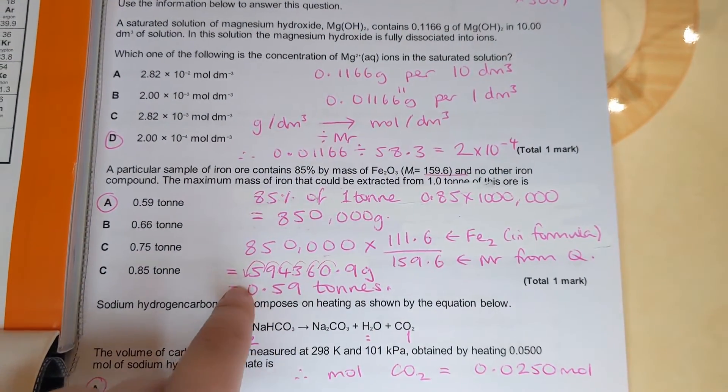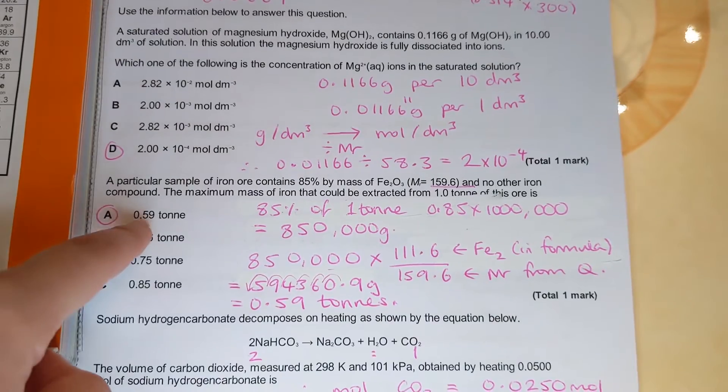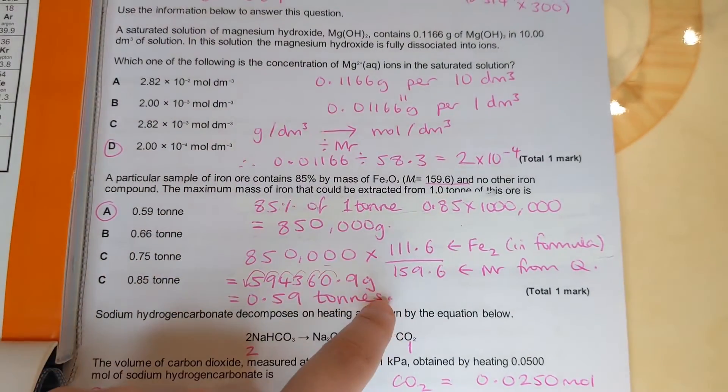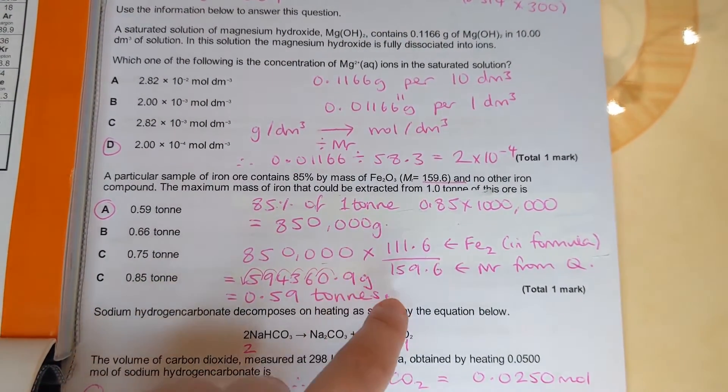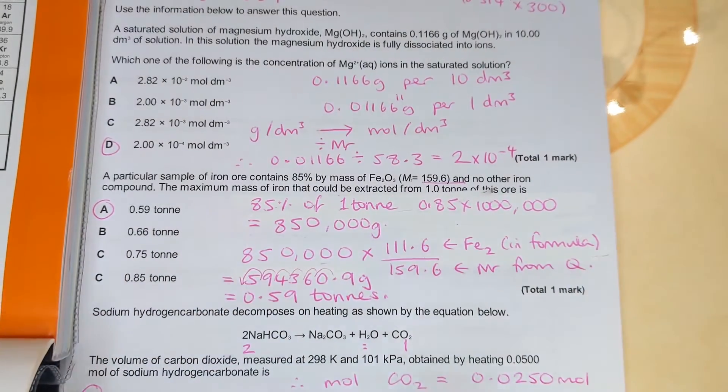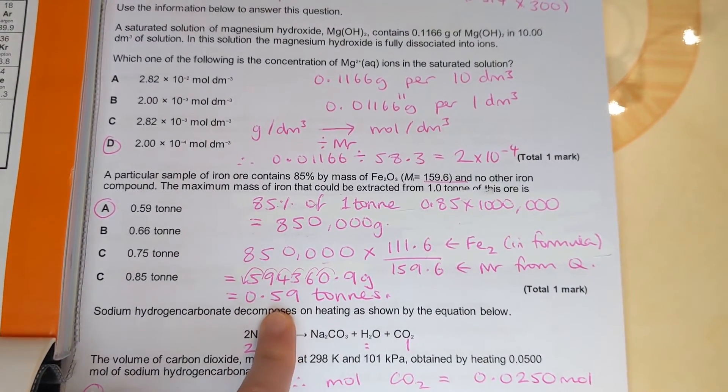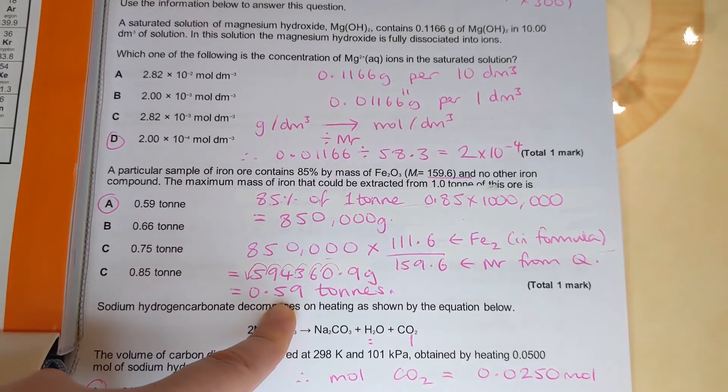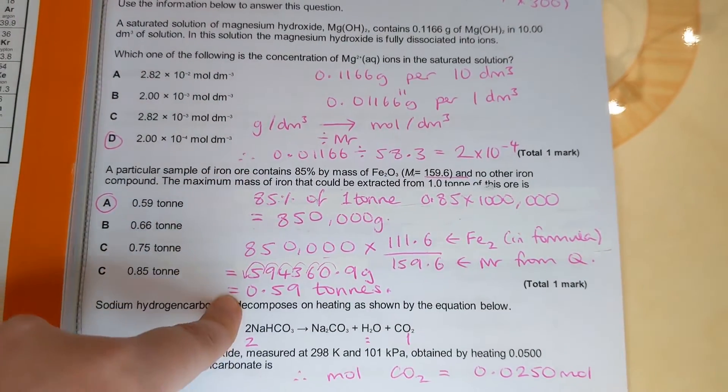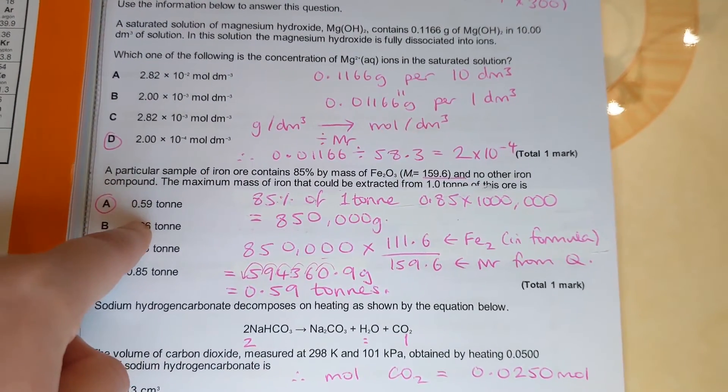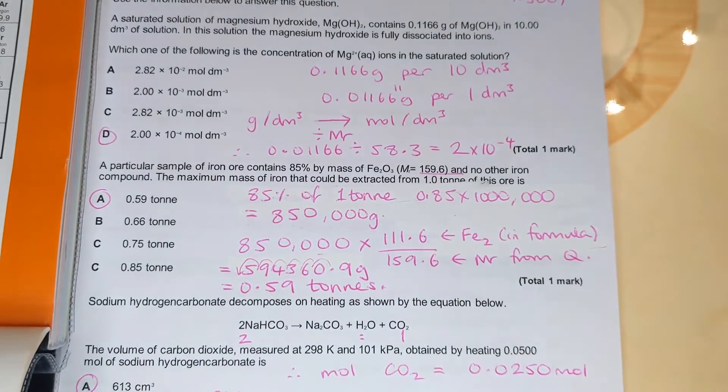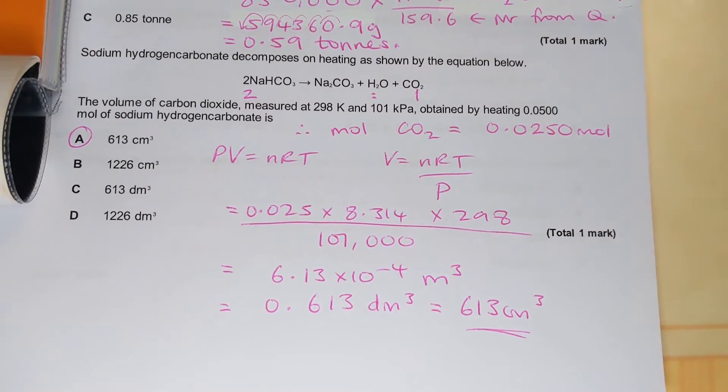And I got an amount in grams. Now these answers here are all in tons so to convert grams back to tons we divide by a million and the answer is A, 0.59 tons. So if you did something different to get that answer feel free to post how you did that in the comments below.